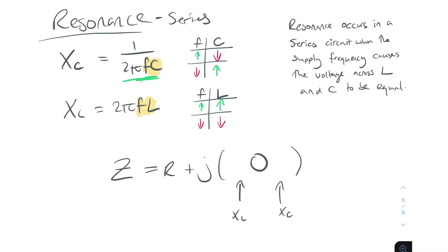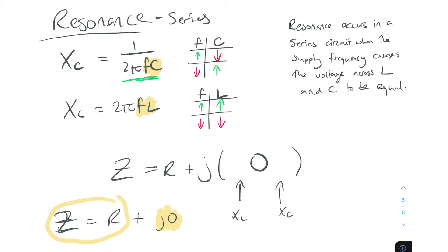What happens is the impedance of the circuit becomes equal to R + j0. The imaginary part of impedance is completely gone and you're only left with impedance equal to resistance. Sometimes that can be a good thing, or sometimes it can be a very bad thing. We'd say the circuit now exhibits resistive behavior only, has no net phase shift, and the current and voltage become completely in phase.